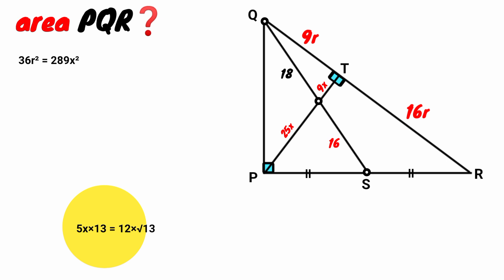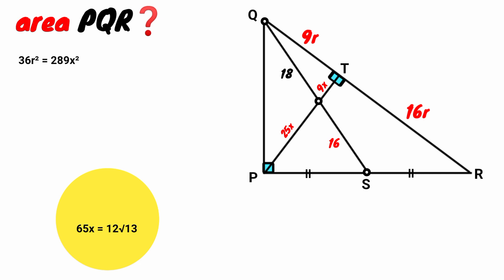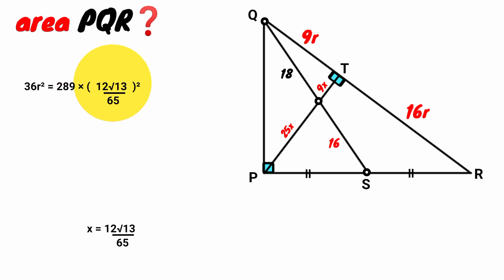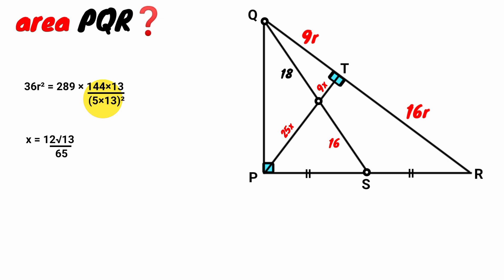So 5x root 13 equals 12. Multiply both sides by root 13: 13 times 5x equals 65x equals 12 root 13. So x equals 12 root 13 all over 65. Substituting back to find x squared: (12 root 13 over 65) squared is 144 times 13 over 65 squared. Since 65 equals 5 times 13, 65 squared is 25 times 169, and the 13 cancels, giving 144 over 325.